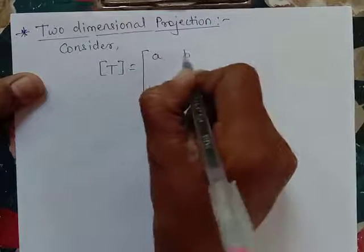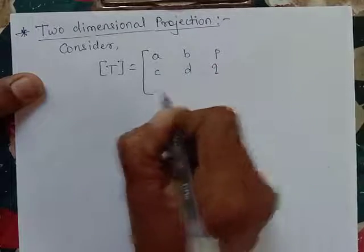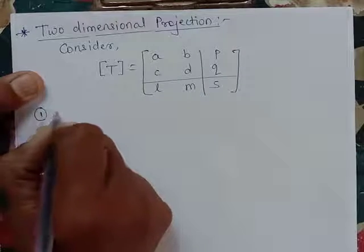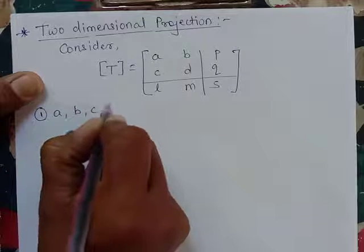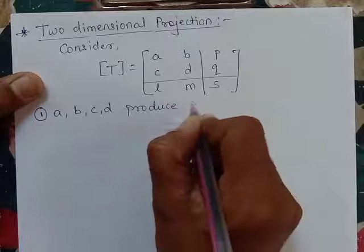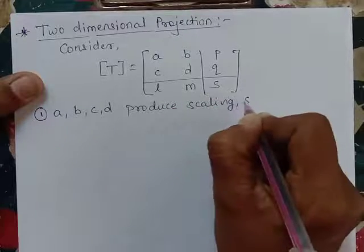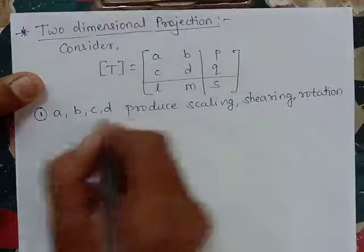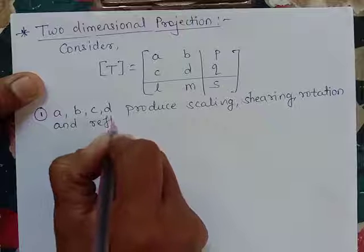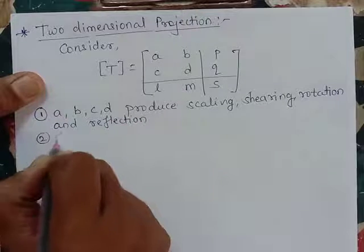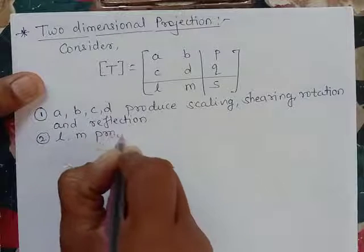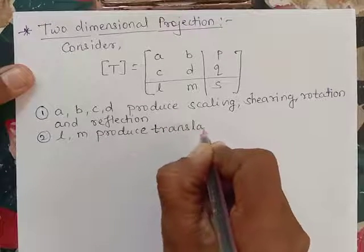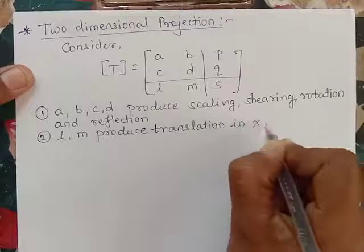The transformation matrix T is: a, b, P, c, d, Q, L, M, S. First, a, b, c, d produce scaling, shearing, rotation, and reflection. L and M produce translation in X and Y directions.